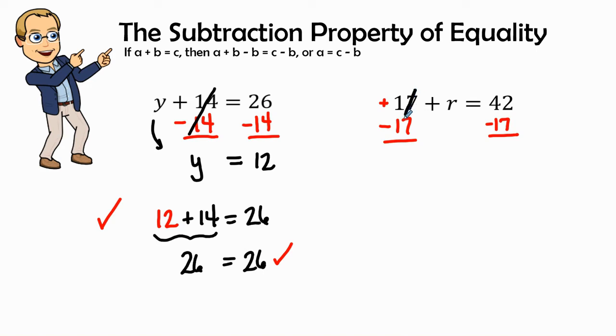This is the inverse of each other, and when we have a number and its inverse, it always equals zero. So, we will have r by itself, and then we'll have 42 minus 17.